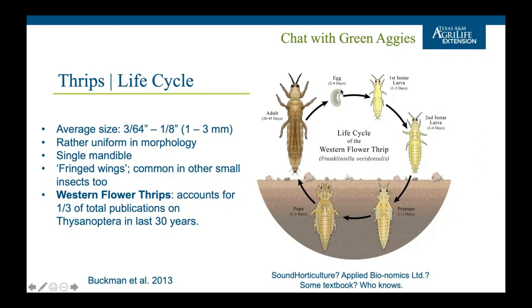In terms of the general life cycle, they lay their eggs on or in plant tissue. The first and second instar larvae are already feeding — very small at this stage, so a hand lens is really helpful. They then go into a pre-pupal and pupal stage, usually in or on the soil or growing media. When it comes to insecticide applications, spraying on a seven or fourteen day interval is designed to break this life cycle, hitting the newly emerged pre-pupae and pupae. Only the adults are winged.